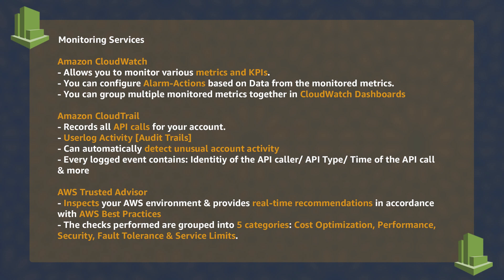Amazon CloudTrail helps you to track all of the activities and APIs executed by your users and forms a user log for audit purposes. Every logged event contains information such as the type of action, who did it, when it happened, and through which management method it happened — whether through the console or through the command line.